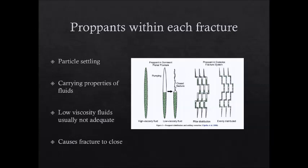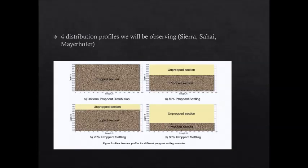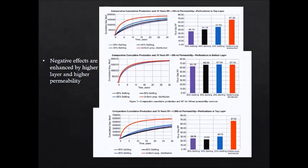Another challenge with proppant distribution is unevenly distributing particles within each fracture due to particle settling and carrying properties of the stimulation fluids. The low viscosity fluids most commonly used during hydraulic fracturing are usually not adequate in effectively transporting proppants and distributing them evenly. The proppants settle into the fracture and can cause closure over time and a reduction in conductivity. As you can see in these graphs, proppant settling is correlated to poor productivity of the well in the long run.